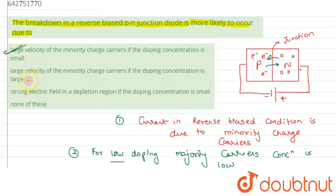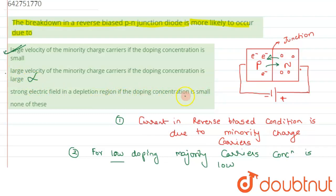The option 'large velocity of minority charge carrier if the doping concentration is large' is incorrect, because if doping concentration is high, majority charge concentration will be very high and that will prevent minority charge carriers from crossing the junction. The option 'strong electric field in the depletion layer if the doping is small' is also incorrect — doping being high increases the electric field in the depletion layer. 'None of these' is also incorrect, as our identified option is the correct answer.